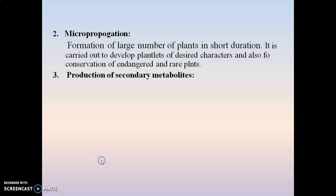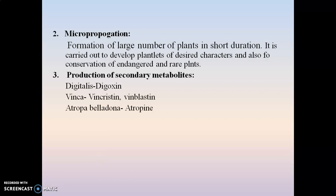For example, digitalis is used for the production of digoxin; vinca is used for the production of vincristine and vinblastine; and atropa belladonna is used for the production of atropine.